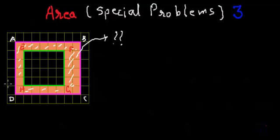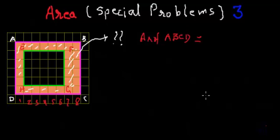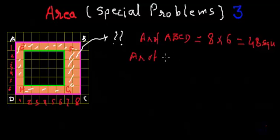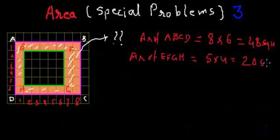One method of finding the area of this ring in peach color is to find the area of the outer rectangle, which is length multiplied by breadth. The length in this case is 8 units and the breadth is 6 units, so the area will be 48 square units. The area of the inner rectangle EFGH is length 5 units multiplied by breadth 4 units, which gives 20 square units.